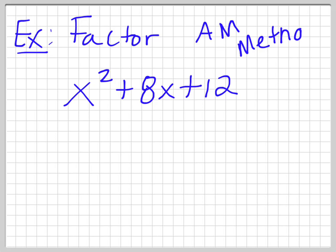So the add multiply method. So what adds to give us 8 and multiplies to give us 12. So we need to think of two numbers to do that.